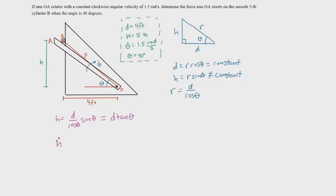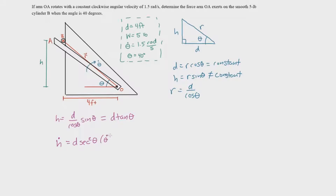Taking the derivative of H with respect to time — denoted by a dot above H — D is a constant so we leave it alone. We take D times the derivative of tangent, which is secant squared theta, and then multiply by the derivative of the inside function with respect to time, which is theta dot. So: Ḣ equals D secant squared theta times theta dot.